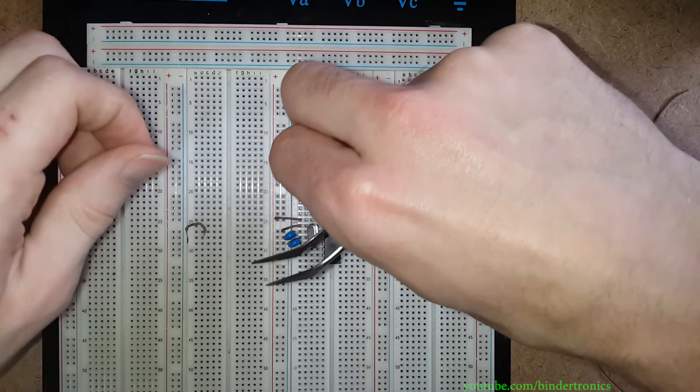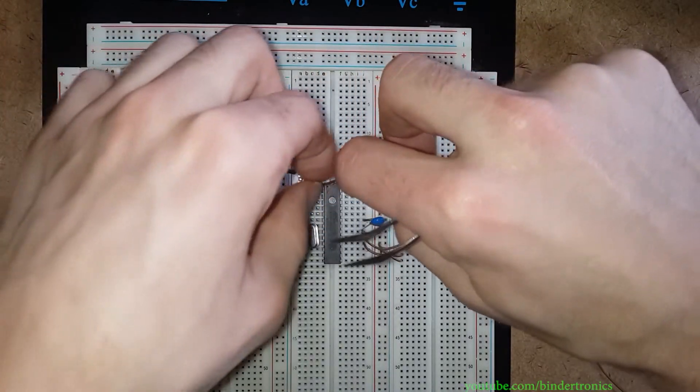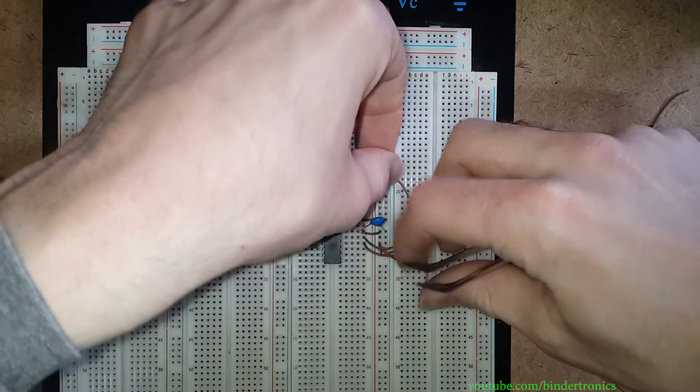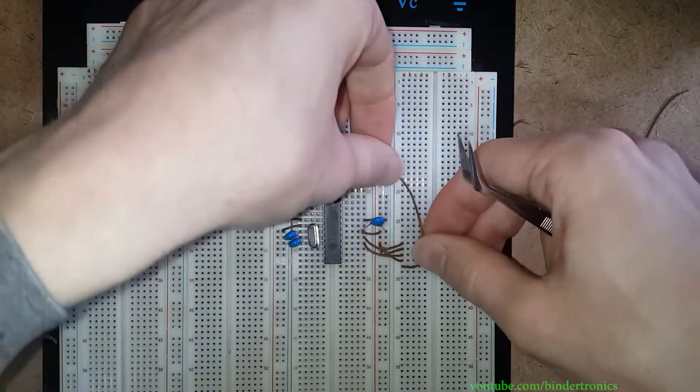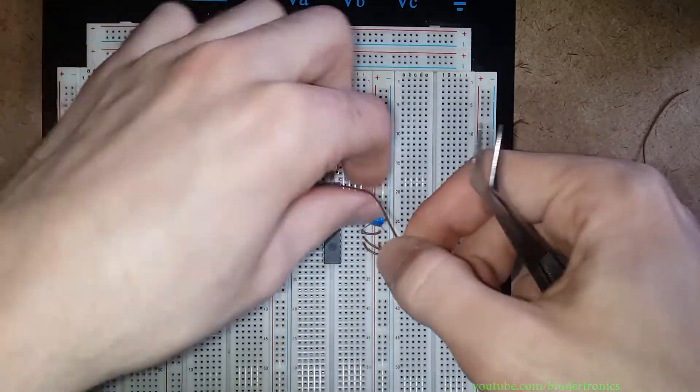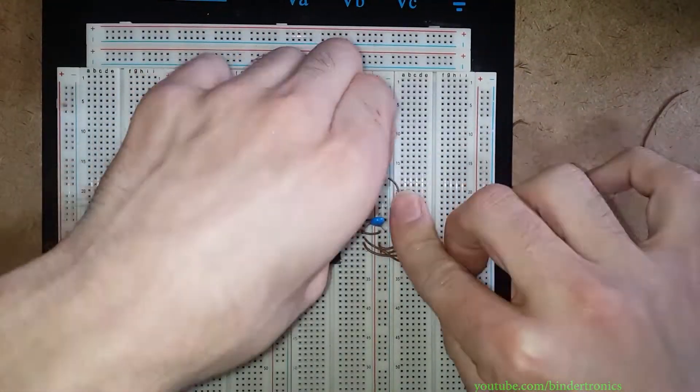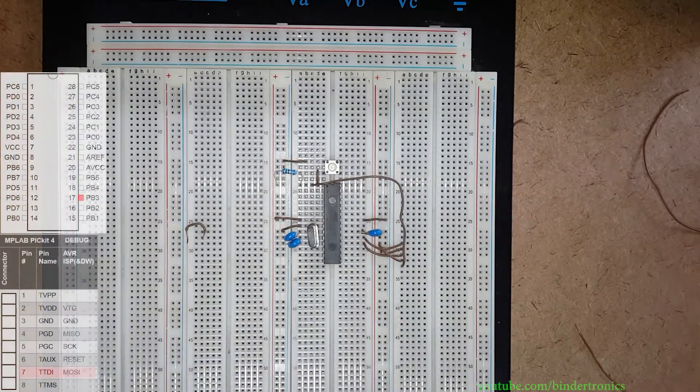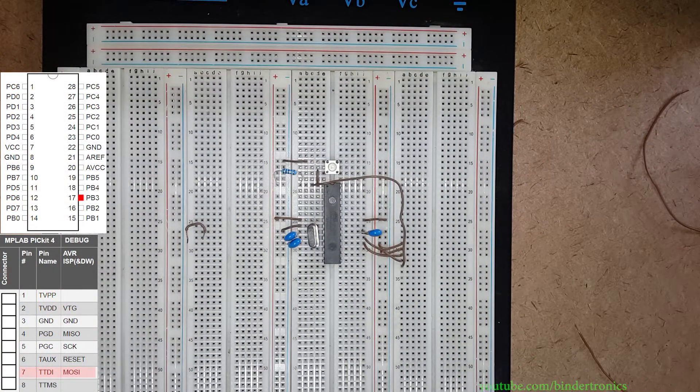And the one after that is going to be reset. What we do is from pin number one we just route a wire round. Now we have our reset line in place and then we have MOSI which is pin 17.